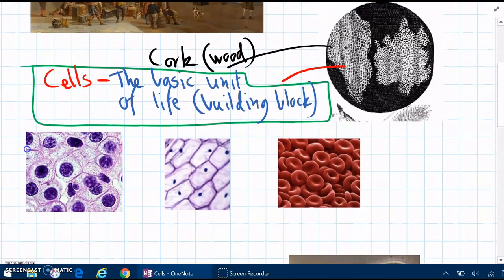So here are a few more examples of what some cells can look like. Here we've got some cells from the cheek of an animal.